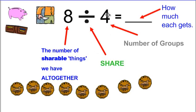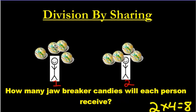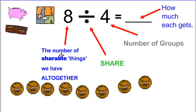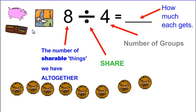The next number is the number of groups you're going to share among. Groups are things that hold things. In my last example, the people hold the jawbreakers. In this example, we have money — so what holds money? We have pockets, wallets, piggy banks. We're going to need four of them, but we've got to pick just one. And the answer is how much each of them gets.